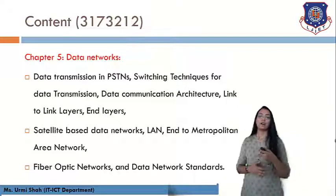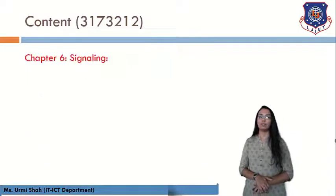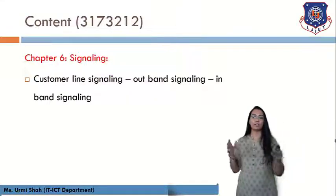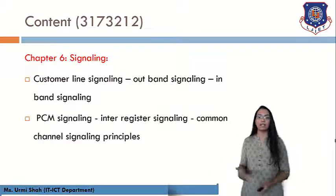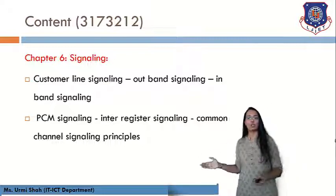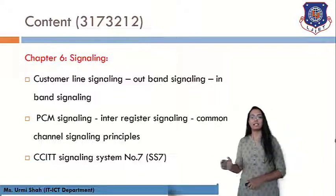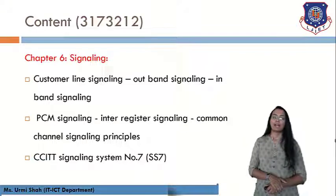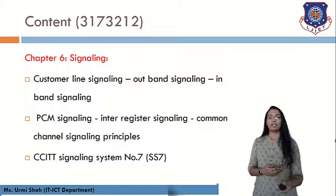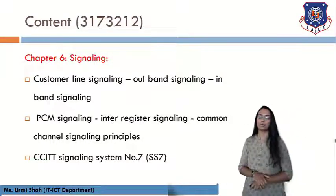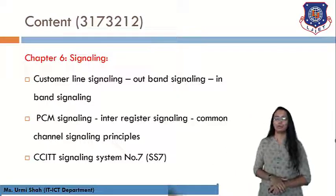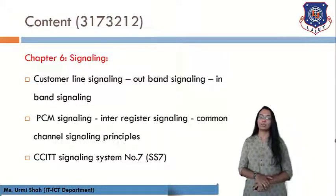We will also learn about fiber optic networks and data network standards. Chapter six deals with Signaling, covering customer line signaling, out-band signaling, in-band signaling, PCM signaling, interregistered signaling, common channel signaling principles, and the CCITT signaling system, which includes the SS7 standard. These are the six units in Telecommunication Engineering that we will be learning in this course.